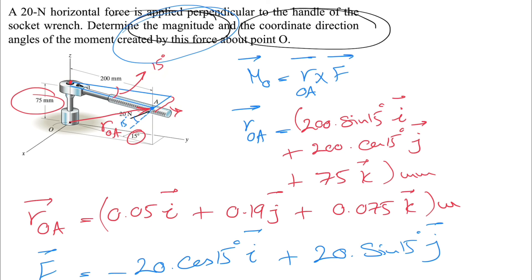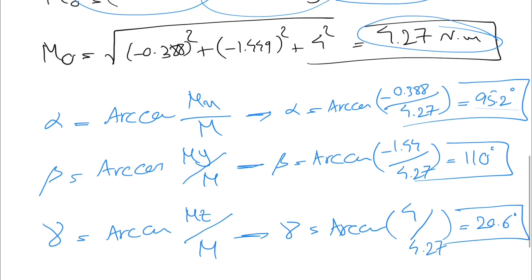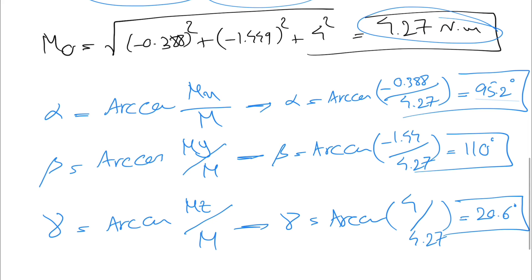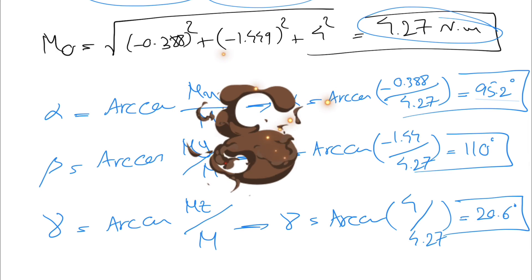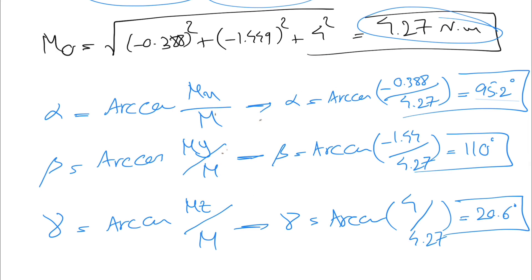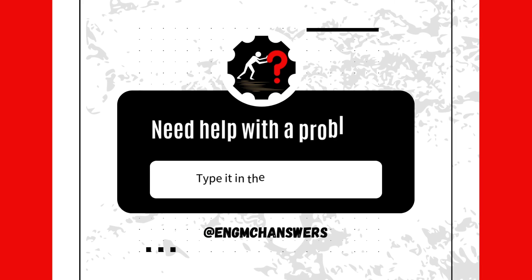So what we found is the magnitude of the moment about point O is 4.27 Newton meters, and the coordinate direction angles are alpha equals 95.2 degrees, beta equals 110 degrees, and gamma equals 20.6 degrees.